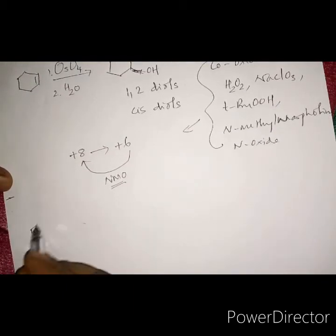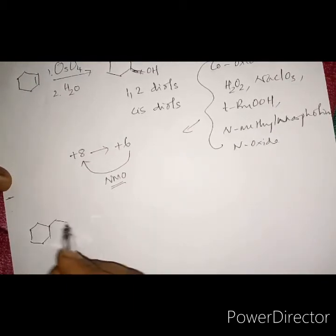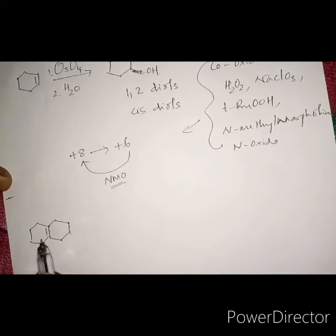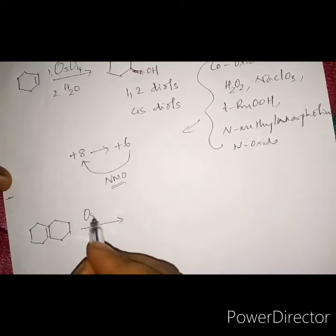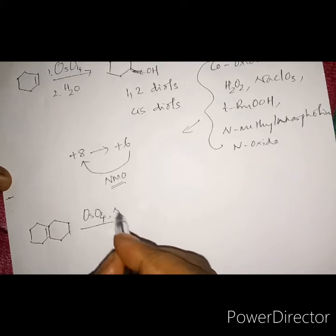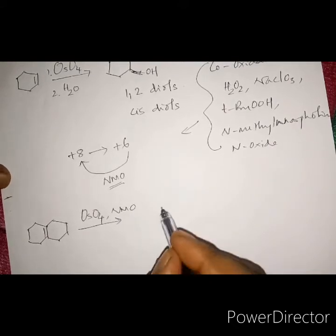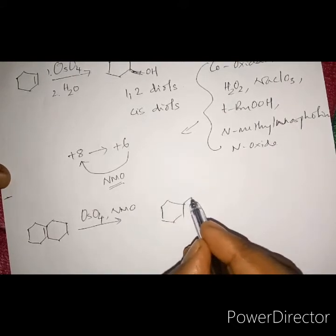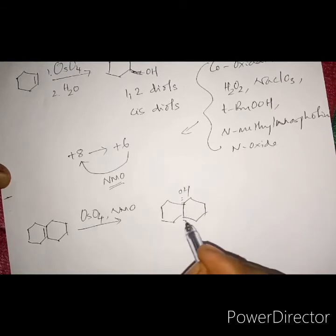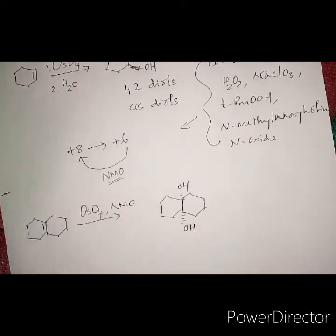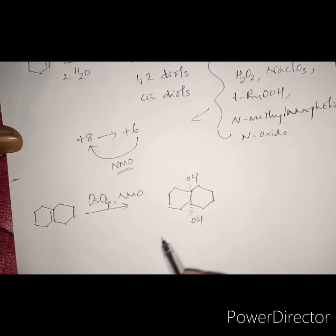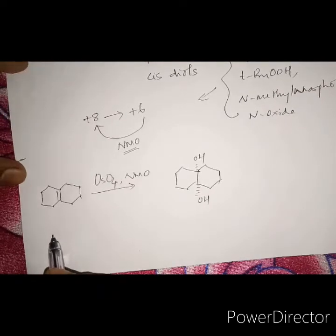For example, using osmium tetroxide with N-methylmorpholine N-oxide, we can carry out syn-hydroxylation — same-side hydroxylation, which we call cis-hydroxylation. Let's take another example to illustrate this.